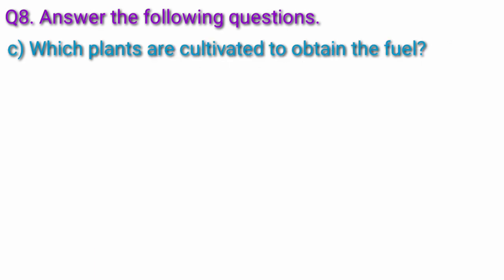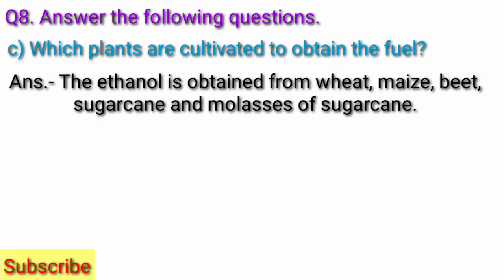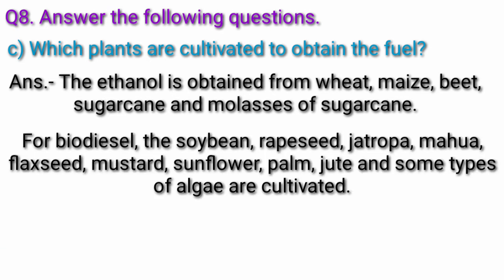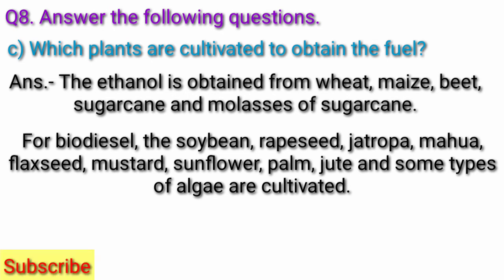Which plants are cultivated to obtain fuel? The ethanol is obtained from wheat, maize, beet, sugarcane, and molasses of sugarcane. For biodiesel, soya bean, rapeseed, jatropha, mahua, flaxseed, mustard, sunflower, palm, jute and some types of algae are cultivated.